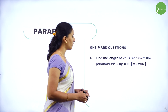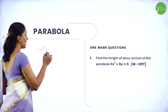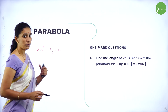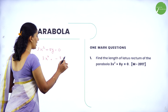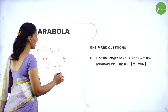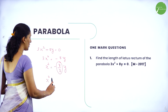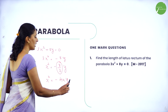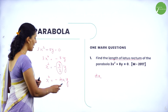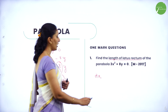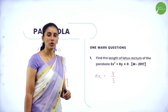So one mark question: find the length of latus rectum of the parabola 3x² + 8y = 0. We can rewrite this as x² = minus 8 by 3 y. Comparing with x² = minus 4ay, that is a downward parabola, the length of latus rectum is always given by 4a. So 4a equals 8 by 3. Therefore, the length of latus rectum is 8 by 3. Since it is a distance, we take only the positive value.